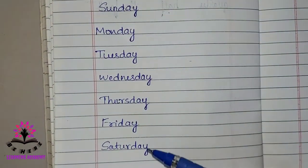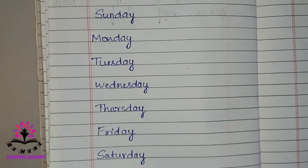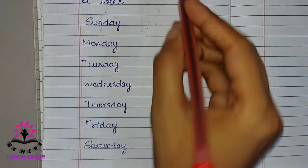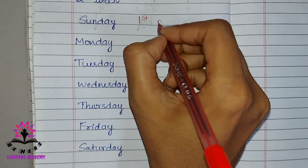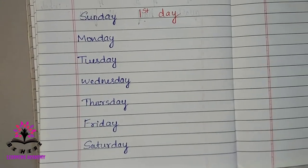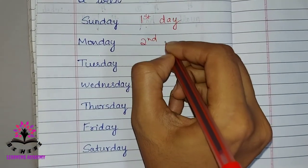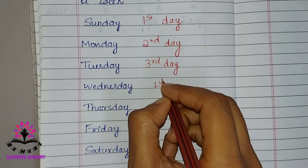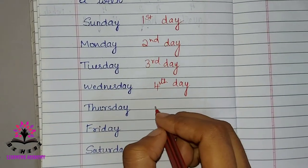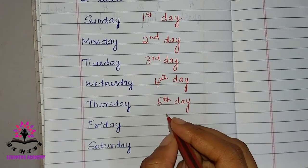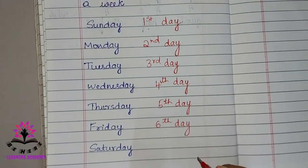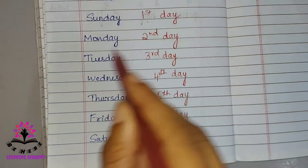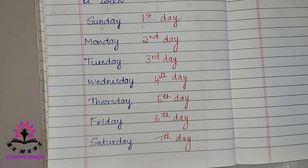Now, which is the first day of the week? Sunday is the first day of the week. Monday is the second day, Tuesday is the third day, Wednesday is the fourth day, Thursday is the fifth day, Friday is the sixth day, and Saturday is the seventh day of the week.